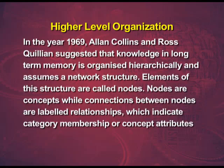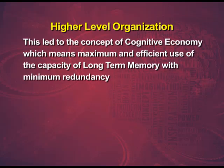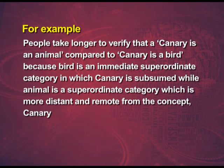For higher level organization, in 1969, Alan Collins and Ross Quillian suggested that knowledge in long term memory is organized hierarchically and assumes a network structure. Elements of this structure are called nodes. Nodes are concepts, while connections between nodes are labeled relationships indicating category membership or concept attributes. This led to the concept of cognitive economy, meaning maximum and efficient use of long term memory capacity with minimum redundancy. For example, people take longer to verify that a canary is an animal compared to 'canary is a bird,' because bird is an immediate superordinate category while animal is more distant and remote from the concept canary.